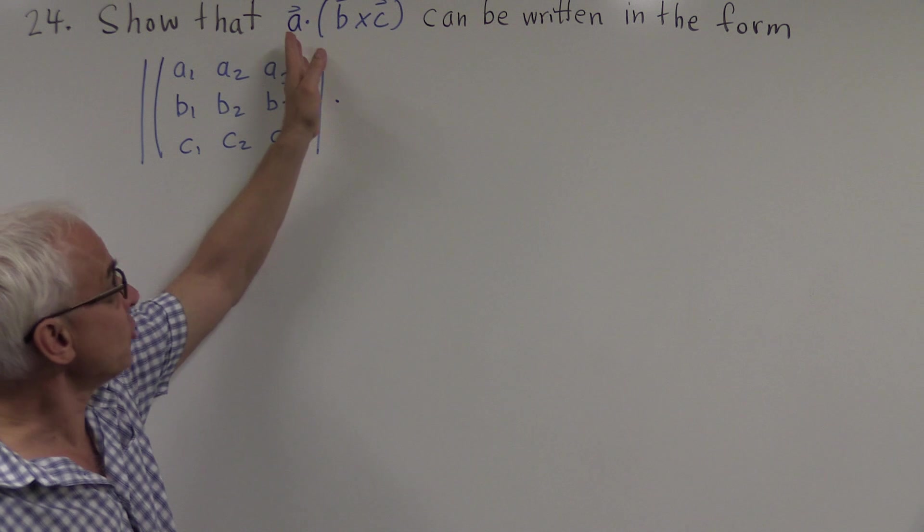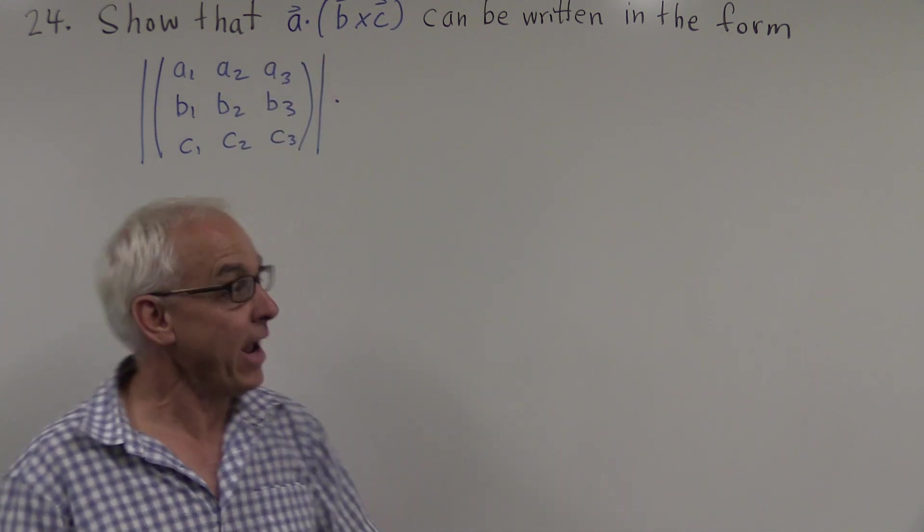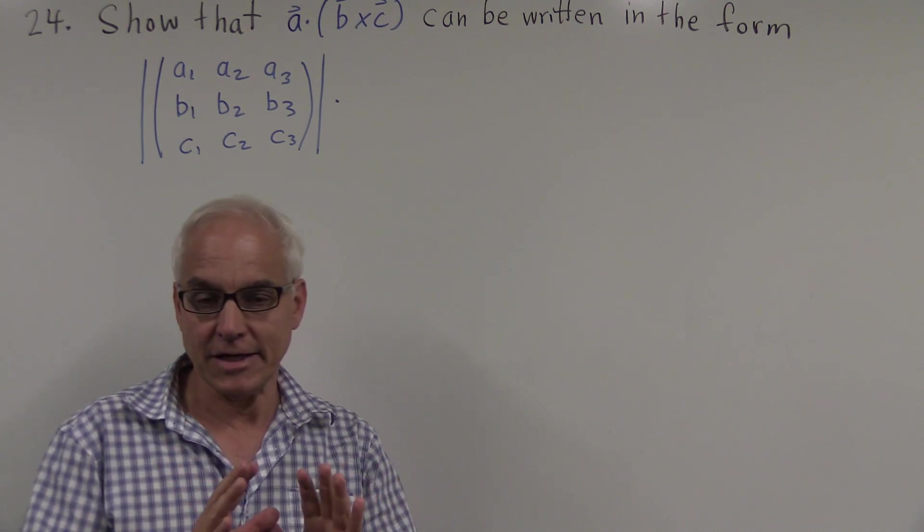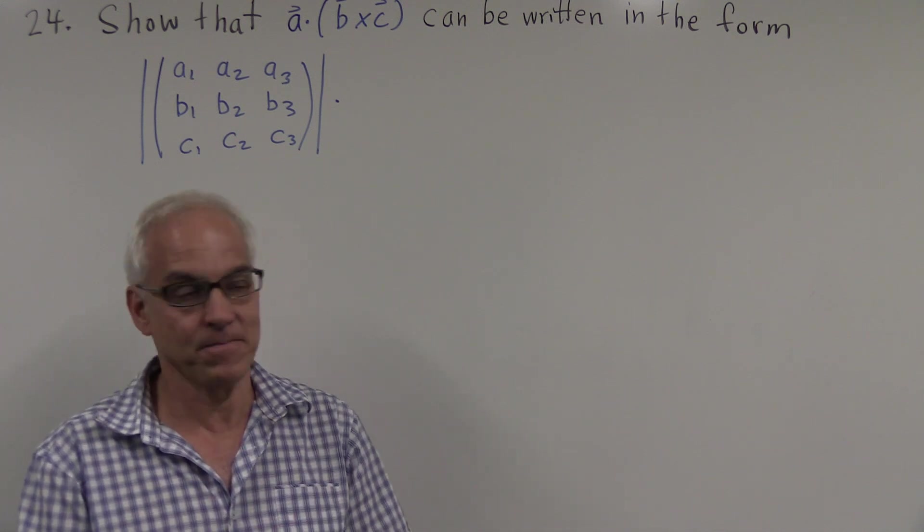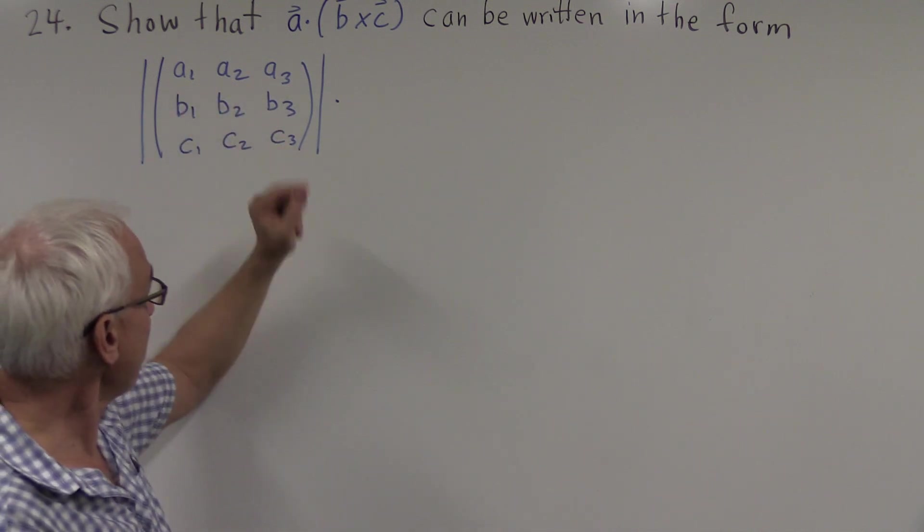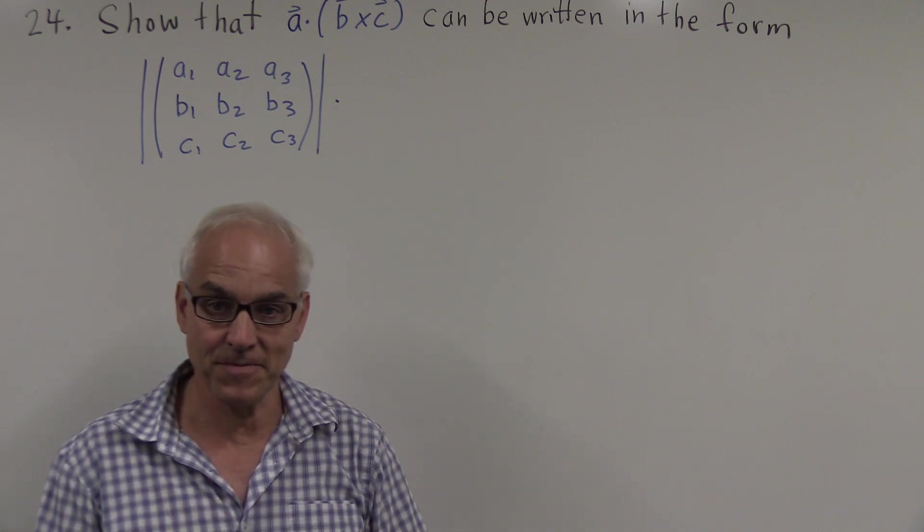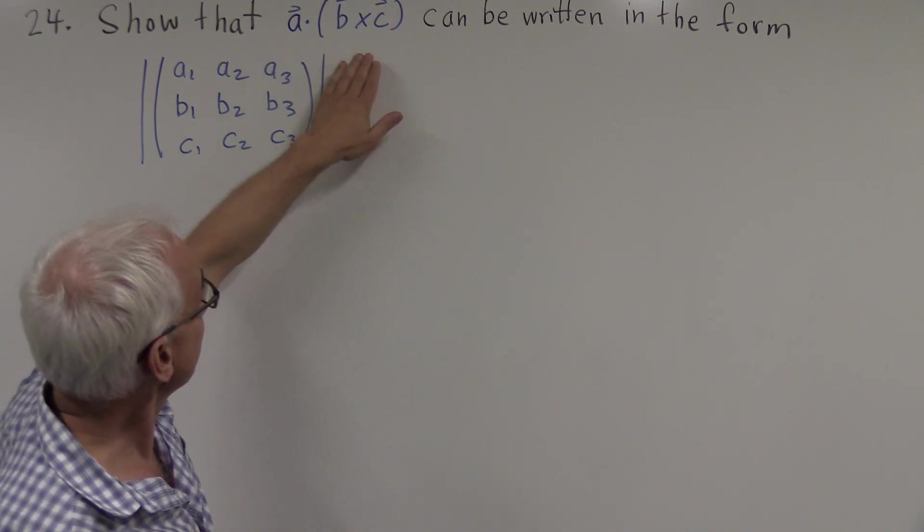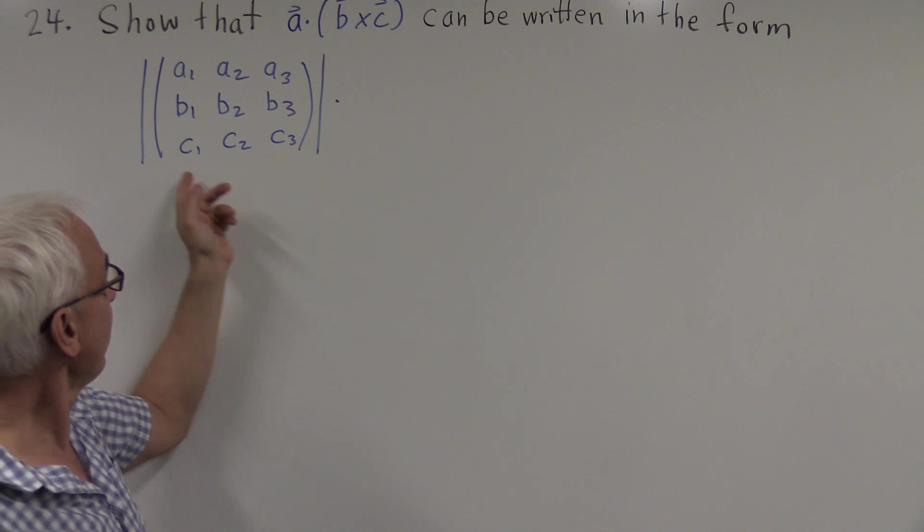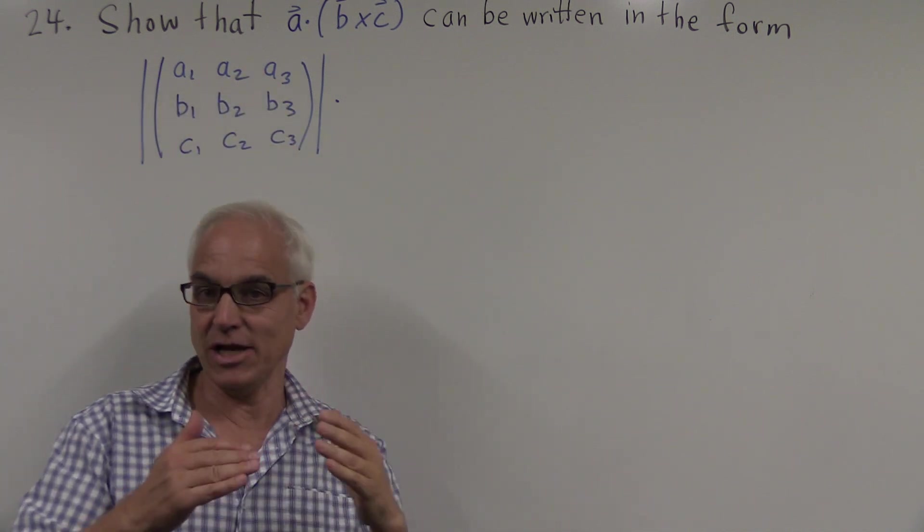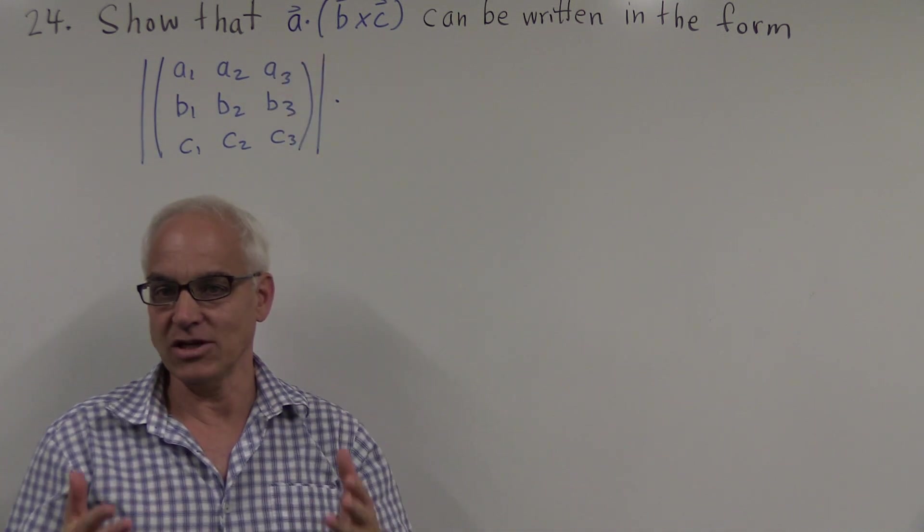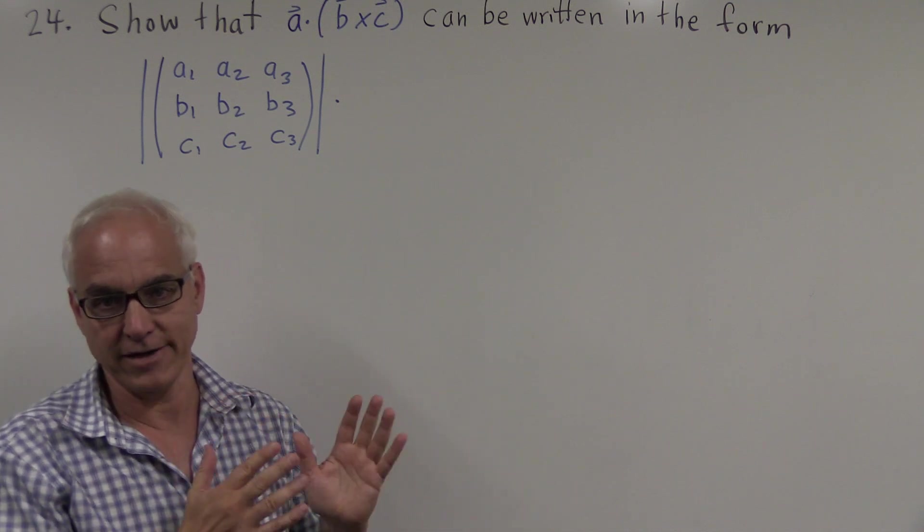This question involves both the dot product and the cross product between vectors and actually identifies an important combination of three different vectors. So we have three vectors a, b, and c with coordinates a1, a2, a3, b1, b2, b3, and c1, c2, c3. And the problem is to show that the quantity a dot b cross c can be written in the form of a determinant. So here's a three by three matrix of entries of the three vectors, and these bars here is another way of saying determinant. So it's the determinant of that matrix.